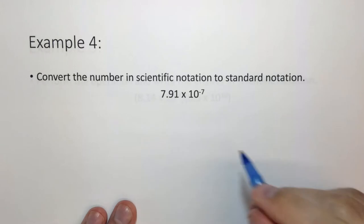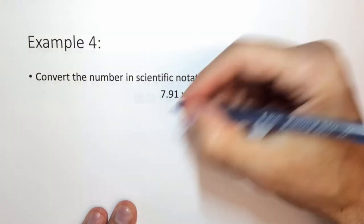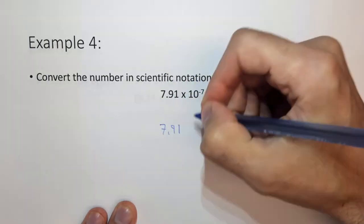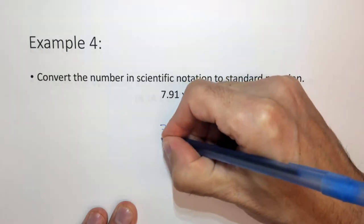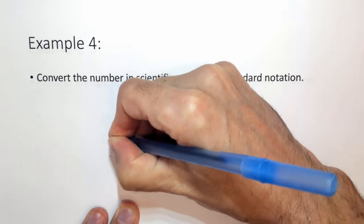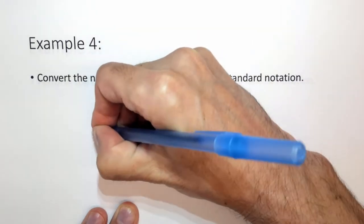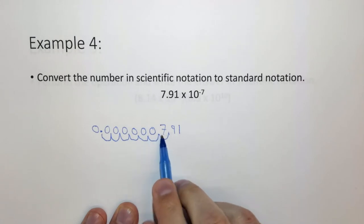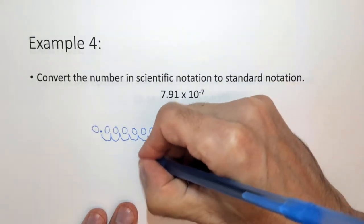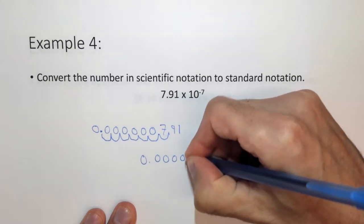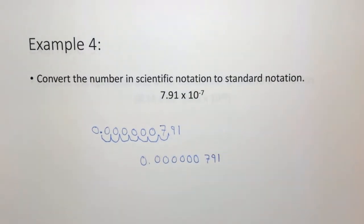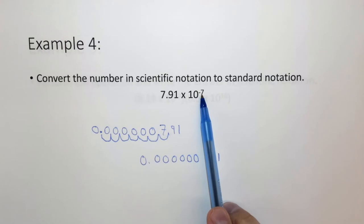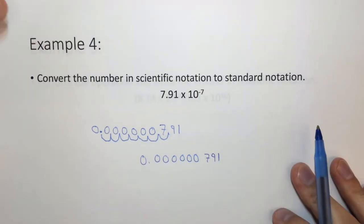Here's another example with a small number. We have 7.91 and we need to move the decimal place seven times to make the number smaller because it's a negative exponent. We put a zero in the front, a decimal place, and then six zeros, giving us 0.000000791. We knew it was a small number less than one because of the negative exponent, and in the previous case we knew it was a big number greater than one because of the positive exponent.